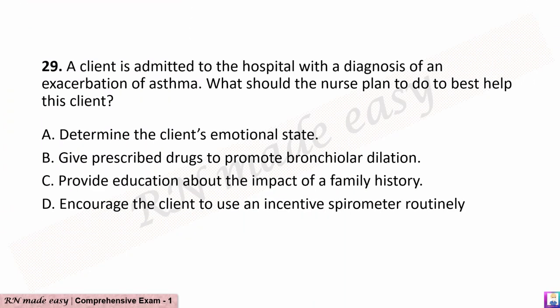Question 29. A client is admitted to the hospital with a diagnosis of an exacerbation of asthma. What should the nurse plan to do to best help this client? A. Determine the client's emotional state. B. Give prescribed drugs to promote bronchiolar dilation. C. Provide education about the impact of a family history. D. Encourage the client to use an incentive spirometer routinely.